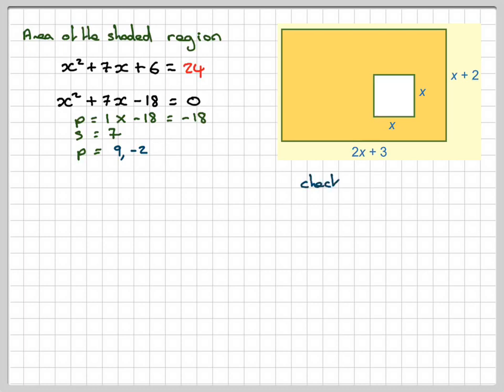We want two numbers whose product is minus 18, whose sum is 7. So try 9 and minus 2. Let's just check. The product 9 times minus 2 gives minus 18. That's OK, that agrees. And then for the sum, we have 9 plus minus 2, which is equal to 7.